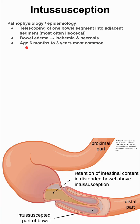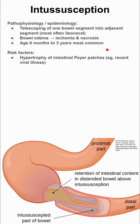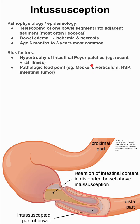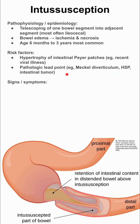It most commonly occurs in patients that are six months to three years old. Risk factors include hypertrophy of the intestinal Peyer's patches, which results after a recent viral illness. You are also at risk if you have a pathologic lead point, such as a Meckel's diverticulum, Henoch-Schönlein purpura, or an intestinal tumor.